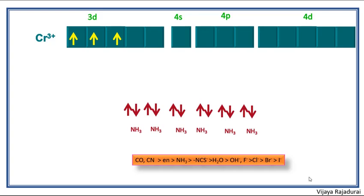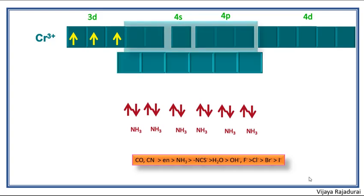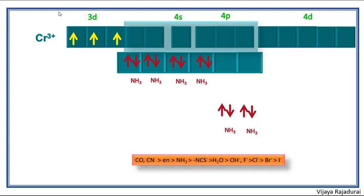But here in this condition it is not required. Two 3d orbitals, one 4s orbital, three 4p orbitals hybridize together, giving d2sp3 hybridized orbitals.